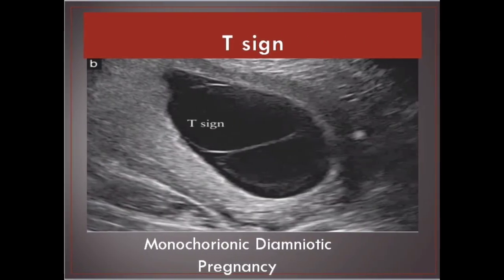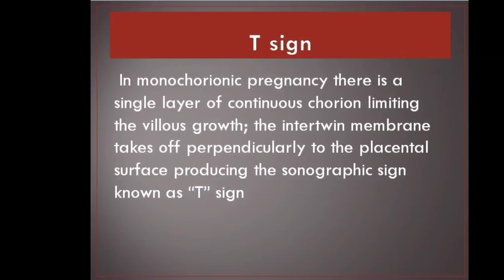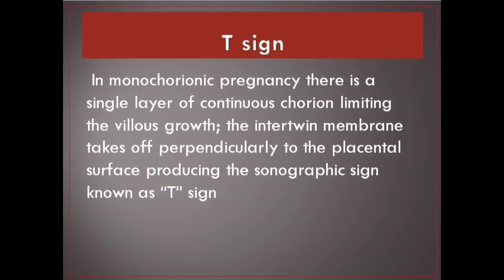D sign. In monochorionic pregnancy there is a single layer of continuous chorion limiting the villus growth. The inter-twin membrane takes off perpendicularly to the placental surface, producing the sonographic sign known as the D sign.